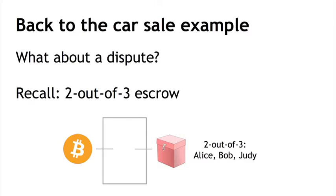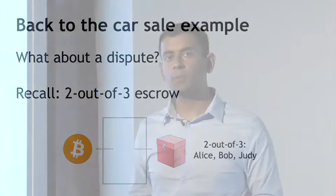You might notice that this seems to lose atomicity — this two-out-of-three escrow covers only the payment. What we ideally wanted was to couple the payment with the transfer of car ownership itself. That can also be accomplished, but it really starts to get a little unwieldy. Let's look at this sort of escrow and dispute mediation and compare it to the traditional real-world solution.